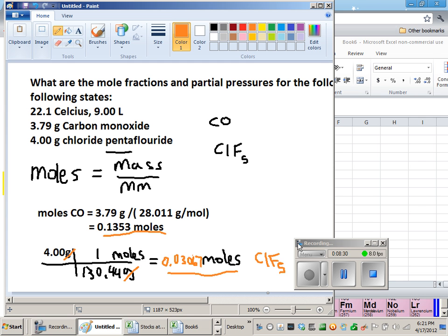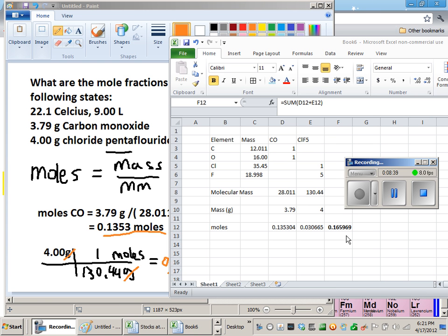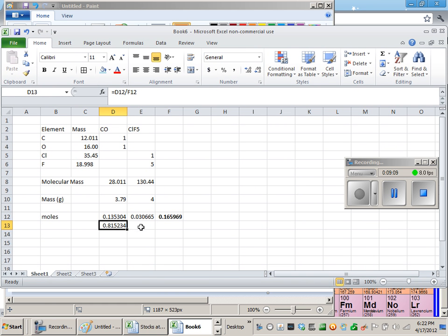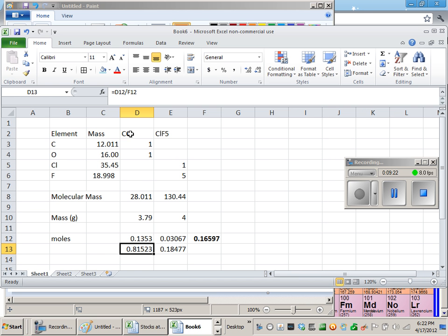We can add those up to get the total number of moles of gas, and then divide each mole number by that total to get the mole fraction. When I add these two numbers up, I get 0.1659 moles total of gas. This is like the number of molecules bouncing around in the gas, regardless of what they're actually made of. If I divide the number of moles of CO by the total number of moles of gas, I get 0.815. That's the mole fraction of each gas. So 81.5% of the particles in the gas are CO, and 18.5% are ClF5.